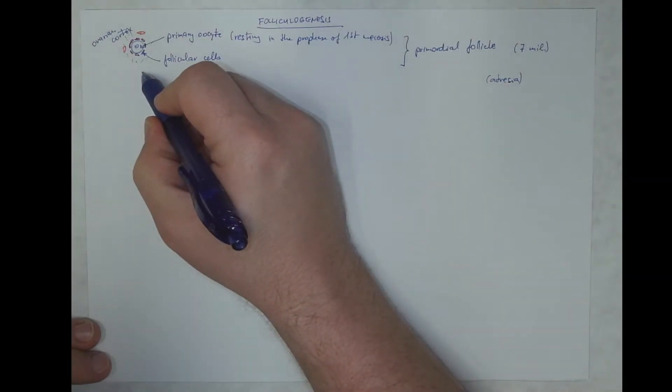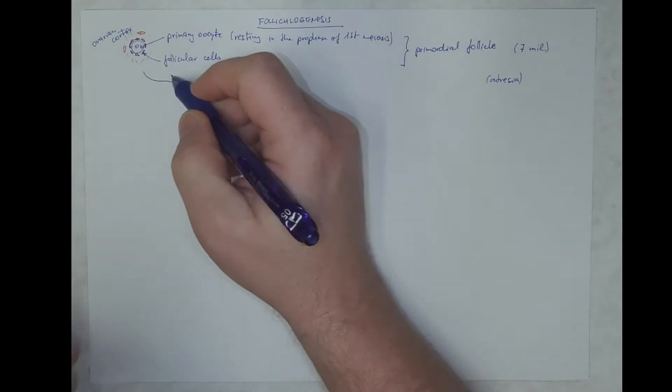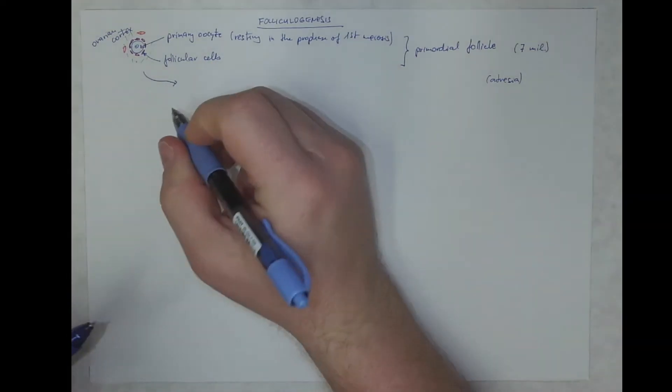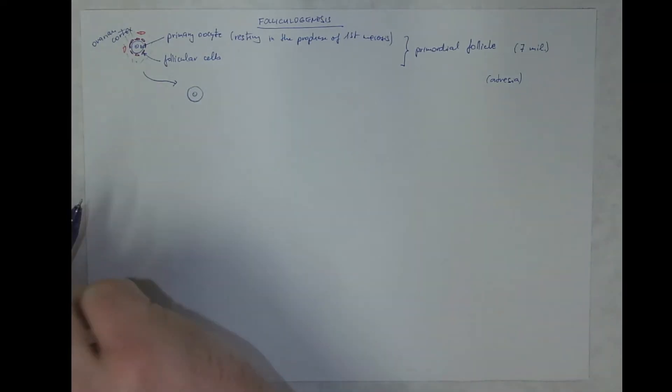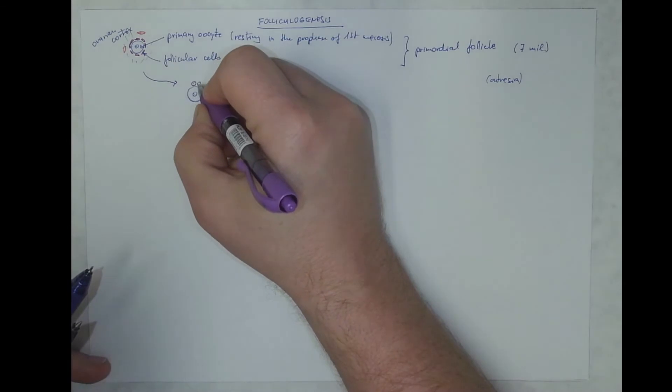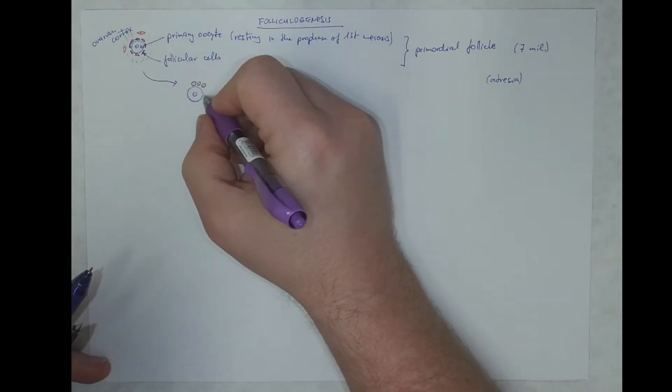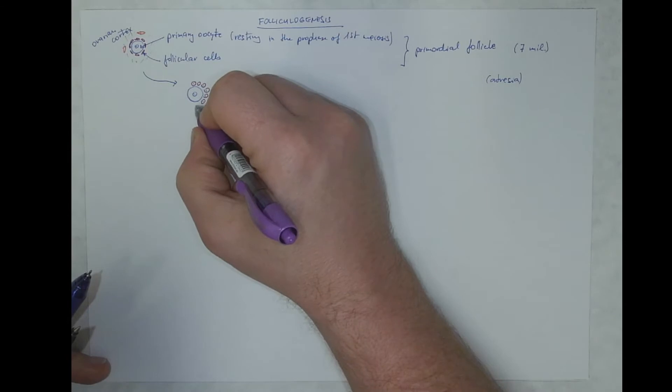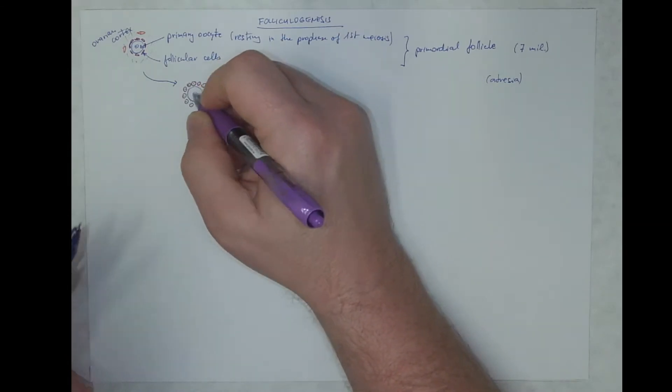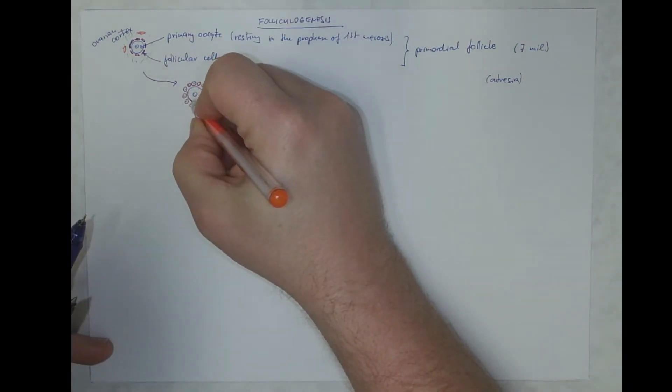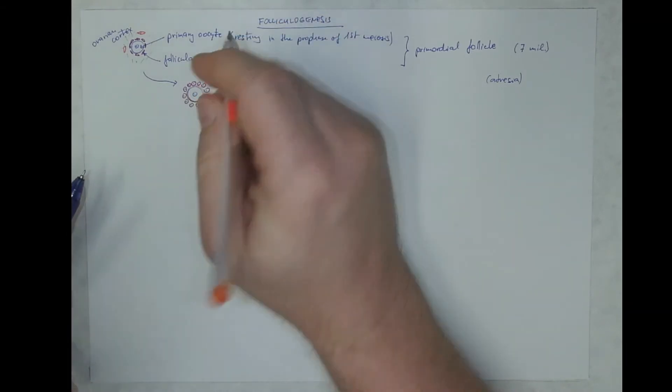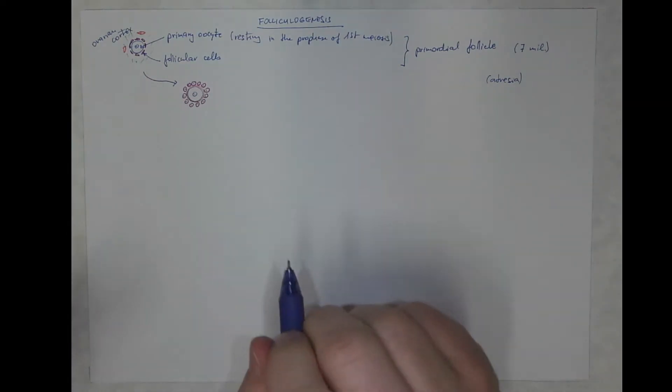However, those that develop further have a primary oocyte, but the epithelium becomes cuboidal. First, it's one layer of cuboidal follicular cells. I am leaving a small gap between the follicular cells and the oocyte because the cells and the oocyte will start to produce a layer made of glycoproteins that is called zona pellucida.